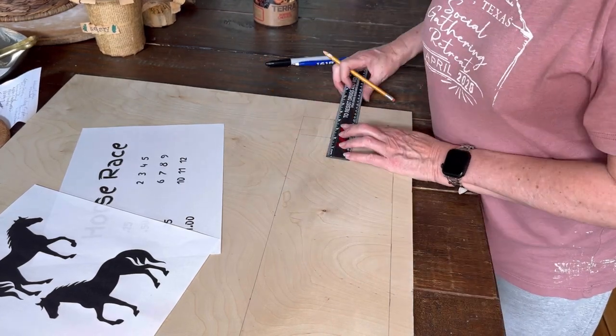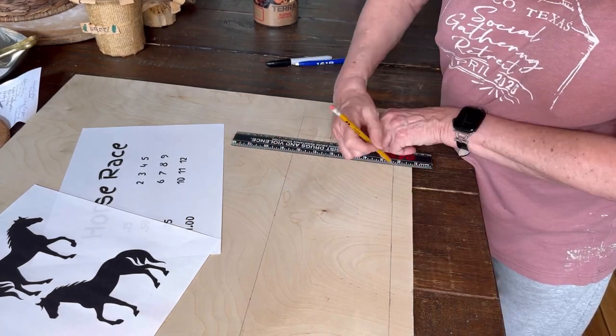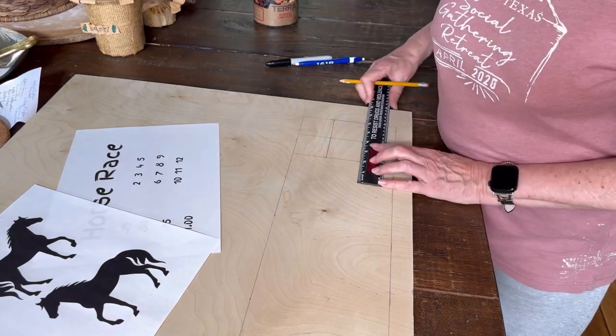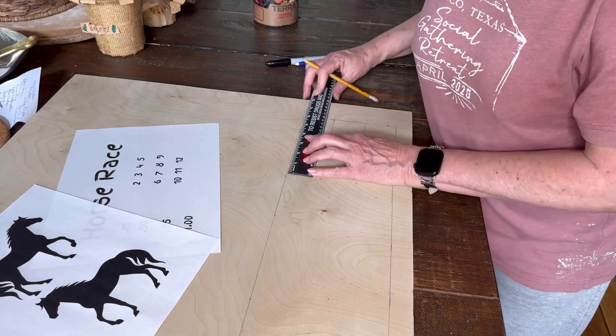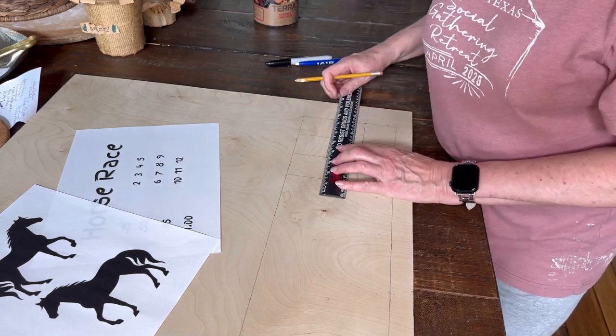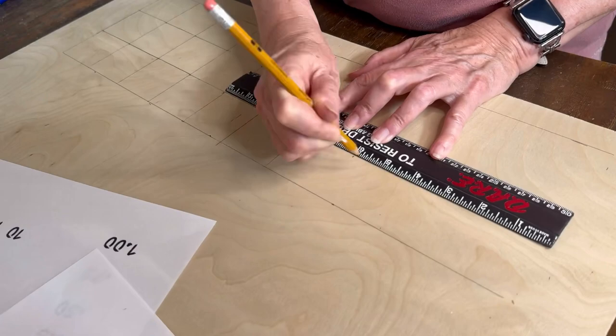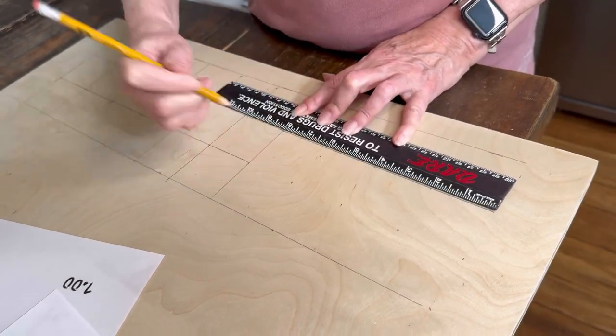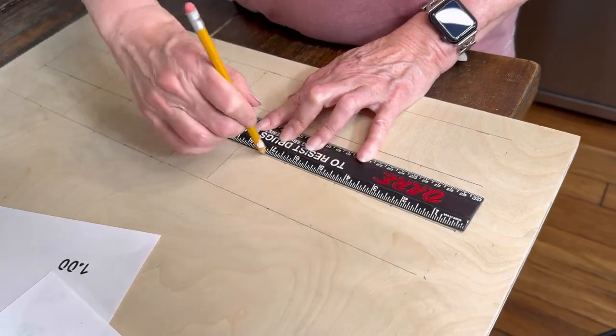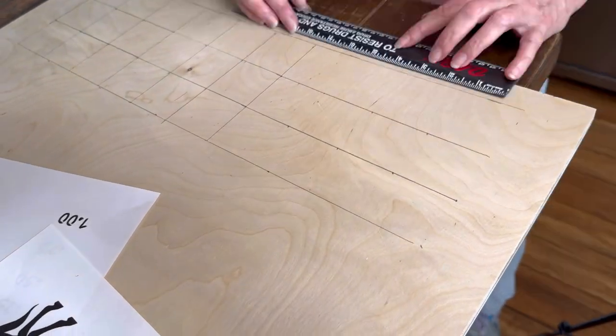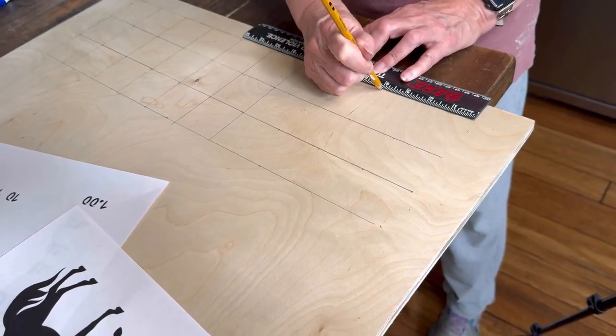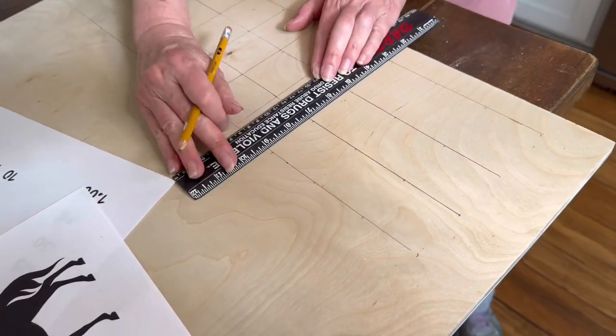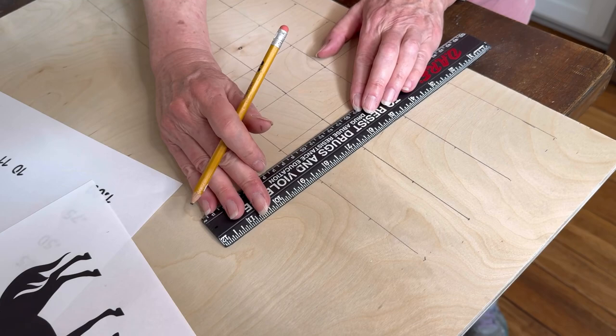These first squares are two by two inches each. And then as we move up the board, we're going to be diminishing the size of them. Just take your ruler and you want to start out with a pencil here because that way if you make any mistakes, you can always erase them and start over.